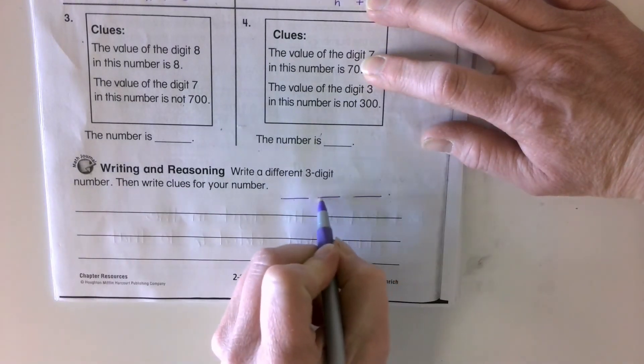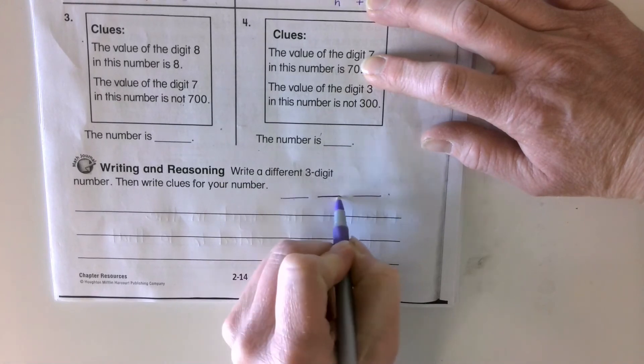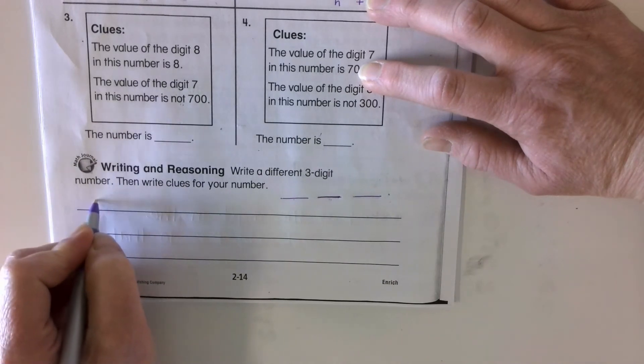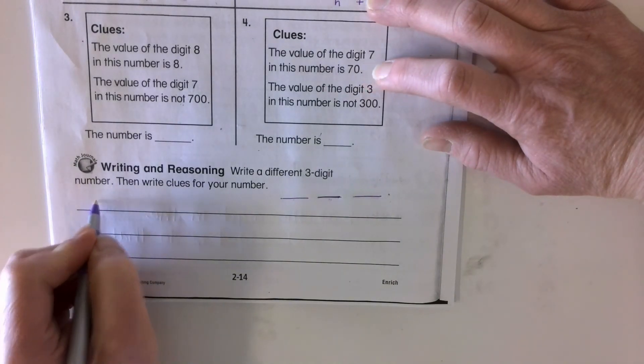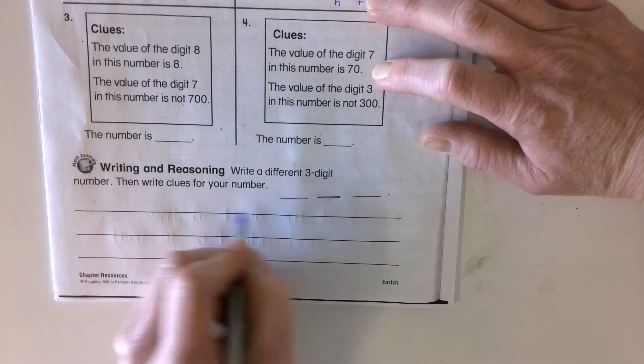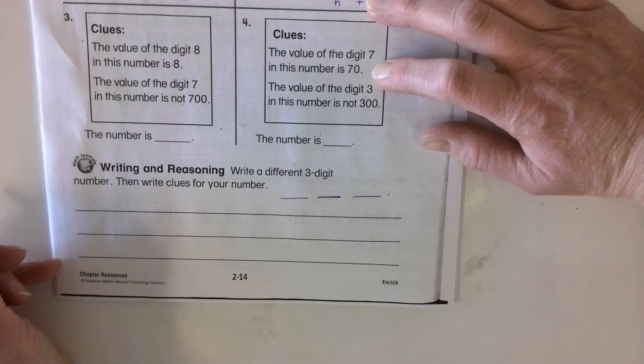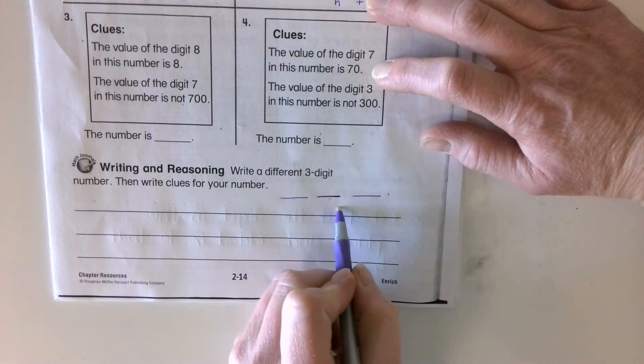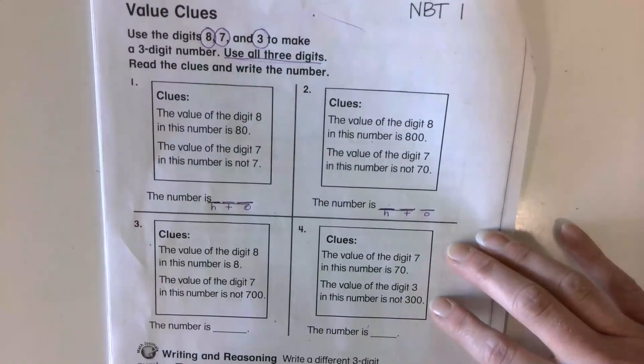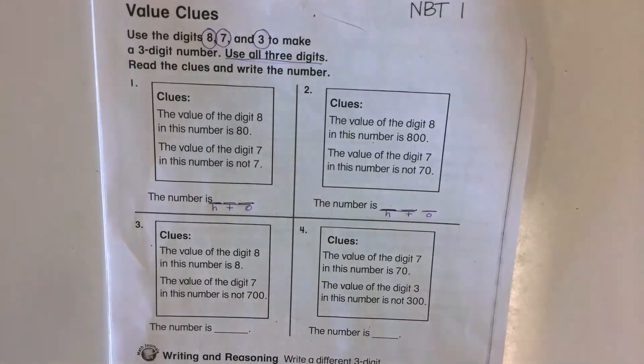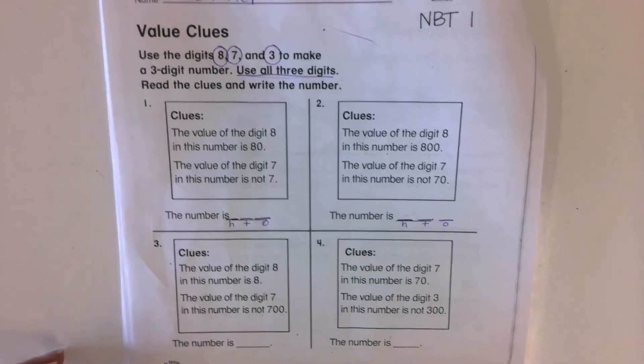So maybe if you chose to have a five here in the tens spot, you'd say the value of the digit five in this number is 50. All right. So you'd make your own clues that go with your three digit number. Hopefully that makes sense. Watch this video again if you're still confused. And I hope you have a good day with math.